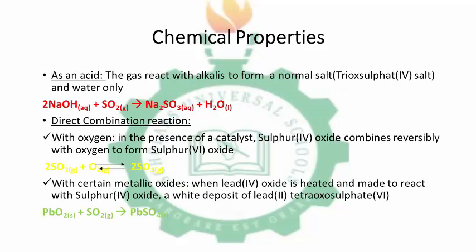Now, the chemical properties of SO2. SO2 behaves as an acid when in water, so it reacts with alkali to form a normal sulfite salt. Aqueous sodium hydroxide, which is an alkali, reacts with SO2 to give Na2SO3, which is sodium sulfite salt, also forming water — this is a neutralization reaction. Another reaction is a direct combination: SO2 reacts with oxygen in the presence of a catalyst to produce SO3, which is sulfur trioxide. The reaction is reversible.